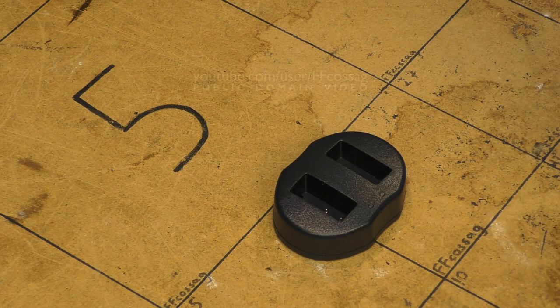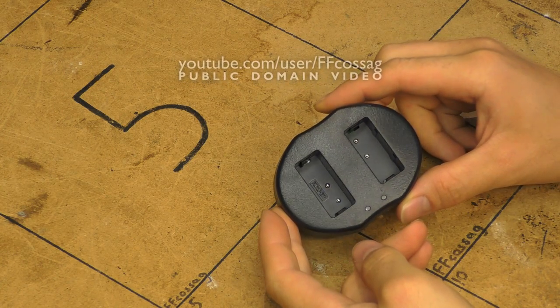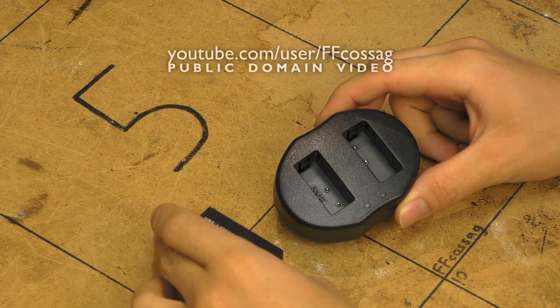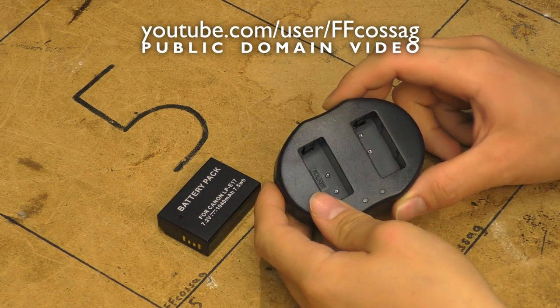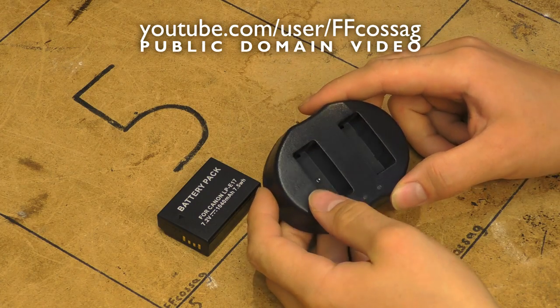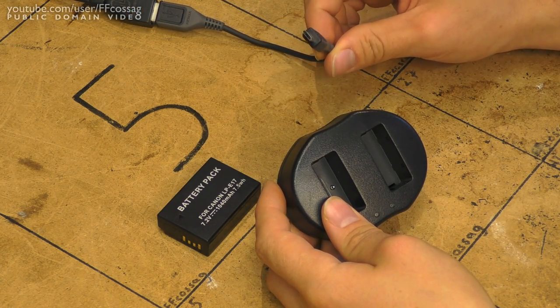This is a fascinating little device, it's a dual charger for Canon LP-E17 batteries, which I got off Viva just because I like the fact that it's got two connectors. But what I didn't think about when I got it is that it's actually USB powered.